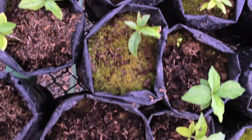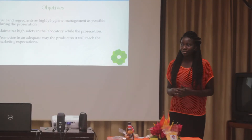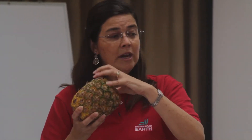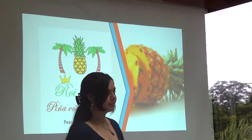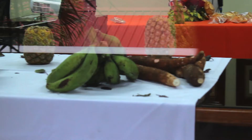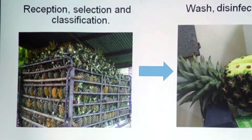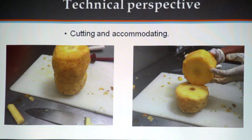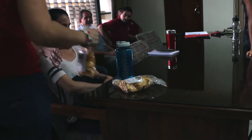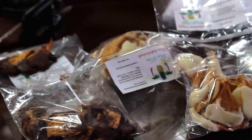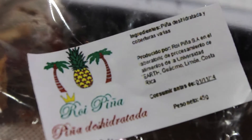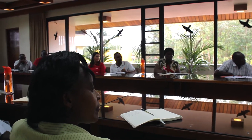Students started by setting objectives — the first was to be the best producer of pineapple on campus, because there was a lot of competition. They had to be the best to sell their product and pass the course. Students present and defend the project. If approved, they receive a loan — actual money. In second year, they implement the project. They buy pineapple from local producers, take it to the lab, clean and wash it, then sell to different clients at different prices.